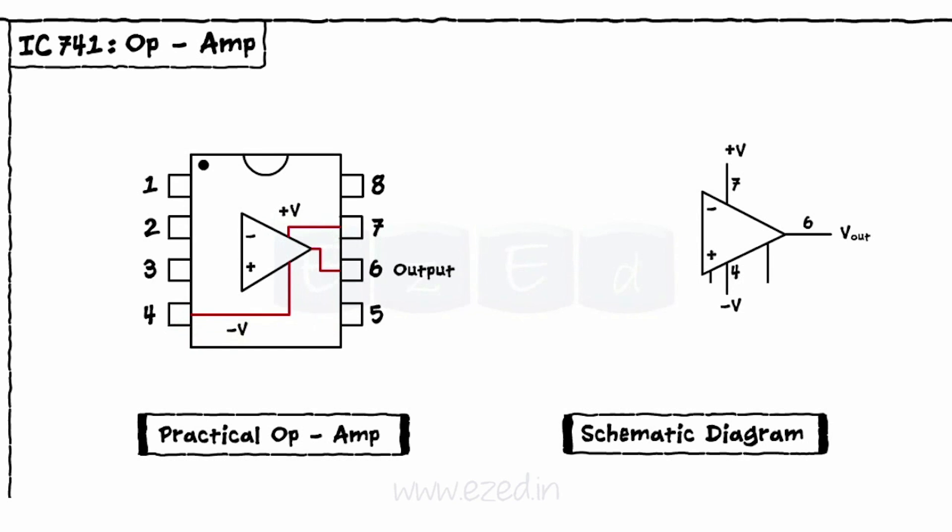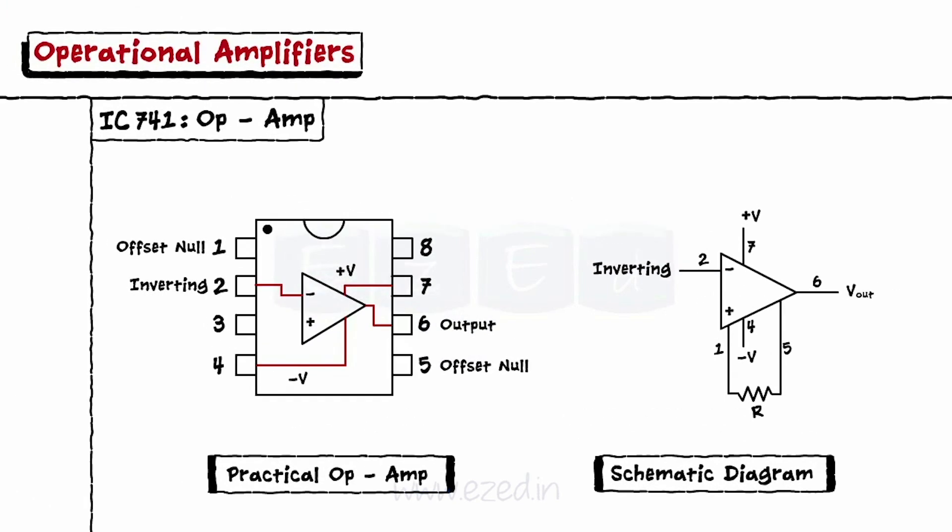Between pin number 1 and 5, an offset resistor is connected, which is explained a little later. Pin number 2 is called an inverting terminal and pin number 3 is called a non-inverting terminal.